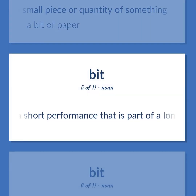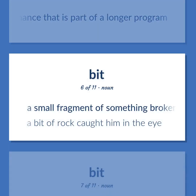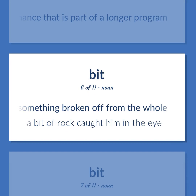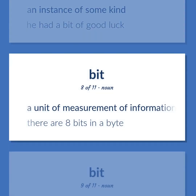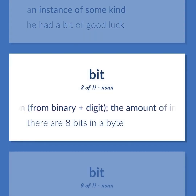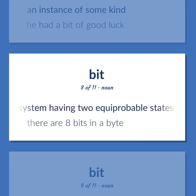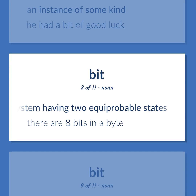Bit: A short performance that is part of a longer program. A small fragment of something broken off from the whole — a bit of rock caught him in the eye. An instance of some kind — he had a bit of good luck. A unit of measurement of information, from binary plus digit; the amount of information in a system having two equiprobable states — there are eight bits in a byte.